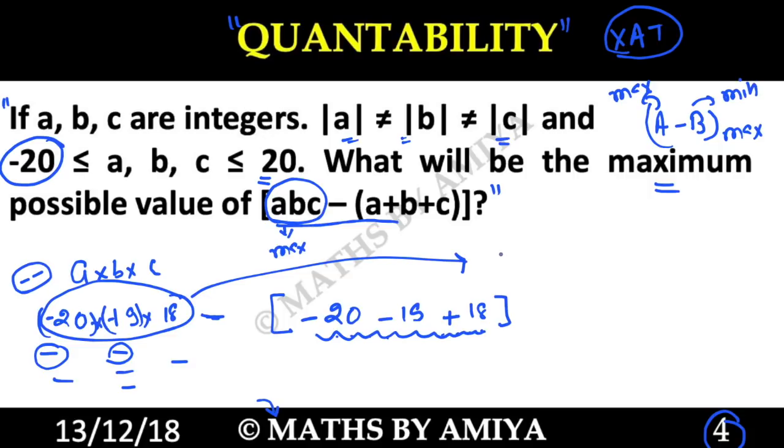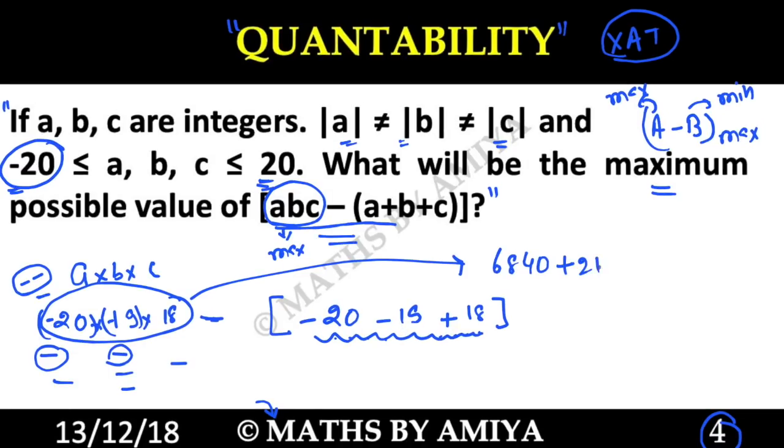20 into 19 into 18 is nothing but 6,840. And if you calculate this, this one is nothing but 21. And this one is nothing but 6,861.